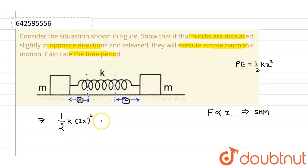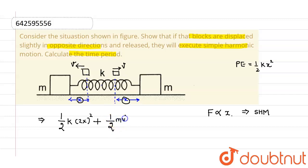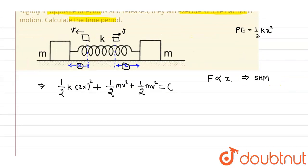As soon as we displace these blocks, when released they will shoot with some velocity v. The kinetic energy of both blocks will be half mv² plus half mv². This total energy must be constant since no external force is present.